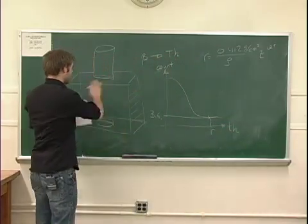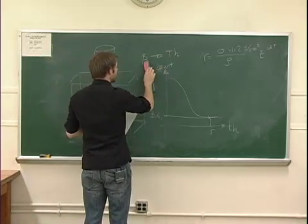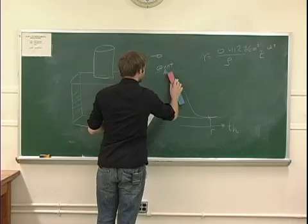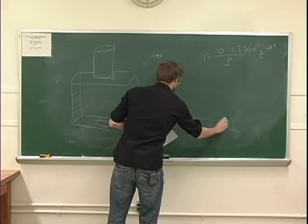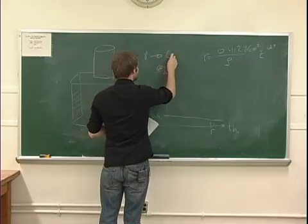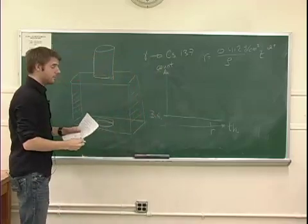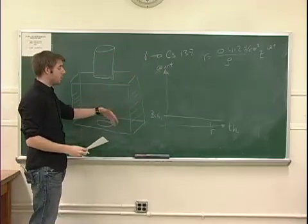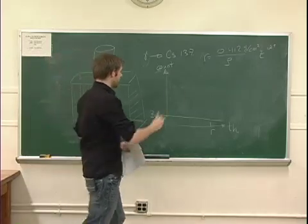Now in the second case, the setup looks identical, but we're going to use, instead of thallium, because we're not interested in beta particles or electrons anymore, we're interested in photons. So in this case, we're going to use cesium-137. And the same thing goes again. We're going to start putting sheets in between here, but instead of aluminum, we're going to put lead because lead stops photons much better.